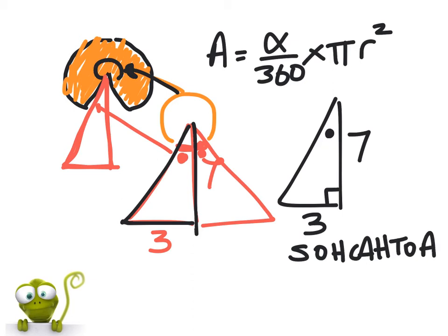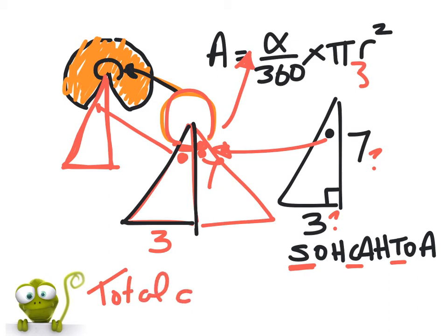The first thing you need to do is name the sides. What's the name of that side? Decide is it sine, cosine, or tan, and work out the missing angle. Once you've got the missing angle, double it, take it off 360—that's what goes in your formula. You know the radius is three. Once you've done all that, you can then work out what the total area is.